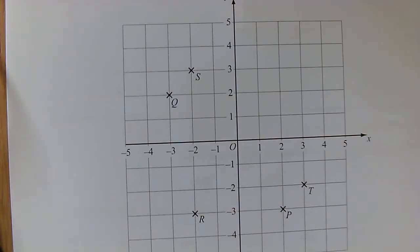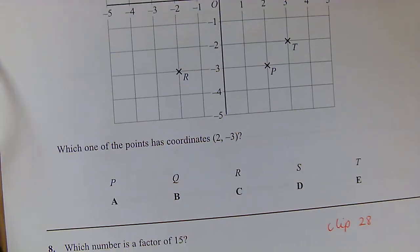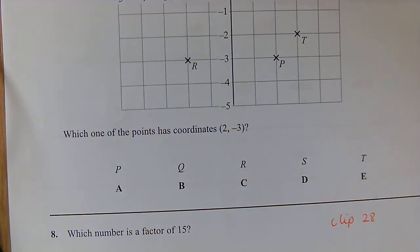Question 7: We're looking at coordinates. Which one of the points has the coordinate 2, -3? So along the corridor 2, down 3, it is point P.